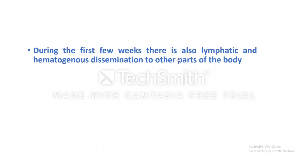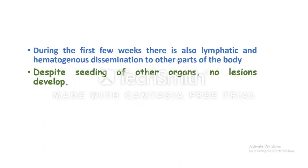During the first few weeks, there is also lymphatic and hematogenous dissemination to other parts of the body. Despite seeding of other organs, no lesions develop. The organisms may die completely inside these tissues, or may remain dormant for some time to appear later — when the immunity of the patient decreases — as isolated organ tuberculosis.